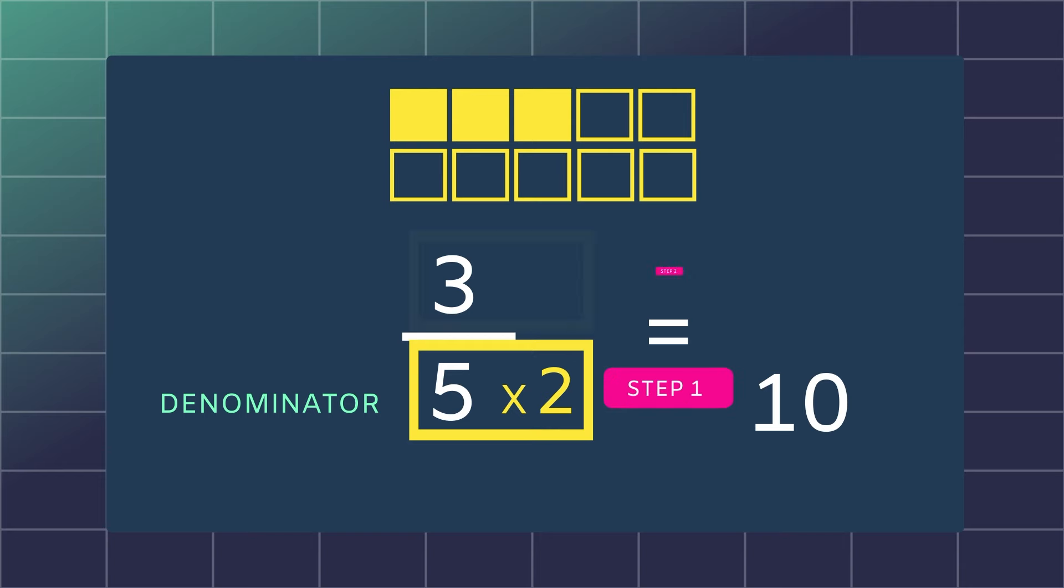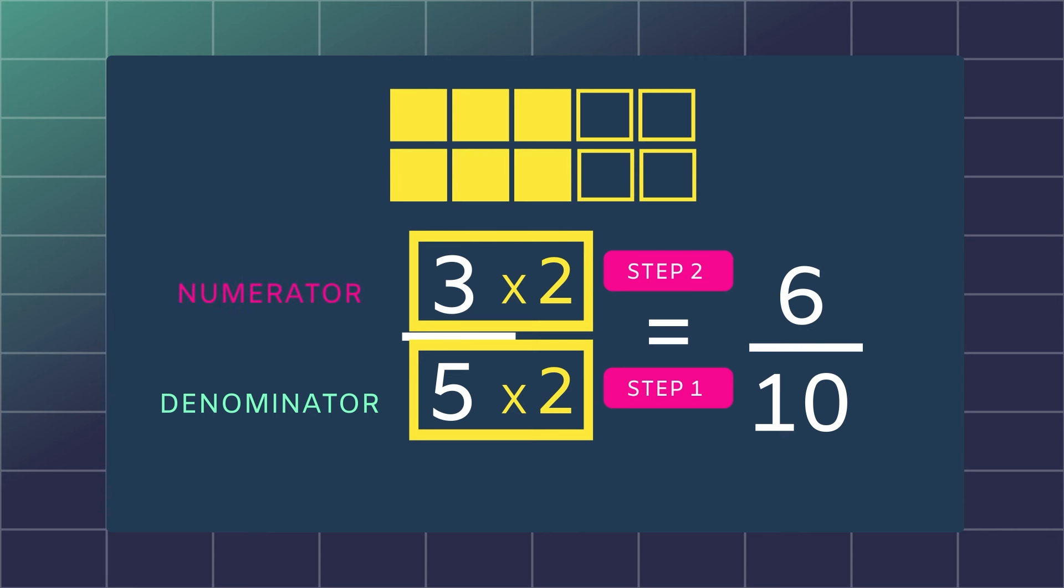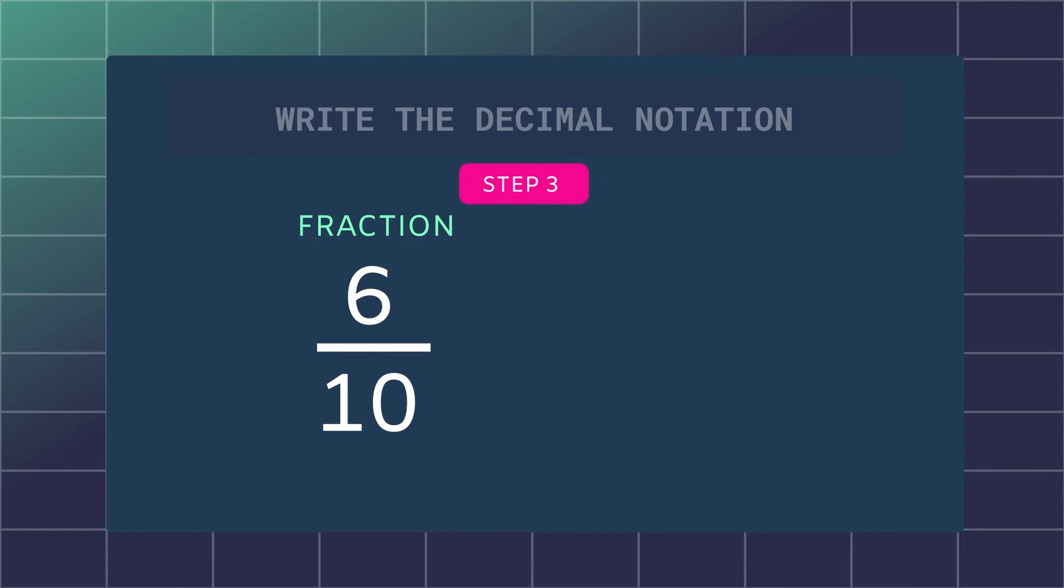But what you do to the bottom, you have to do to the top. So we must multiply the top number, the numerator, by 2 as well. Our new fraction will be 6 tenths. Pause the video and write the decimal notation. 0.6 is correct.